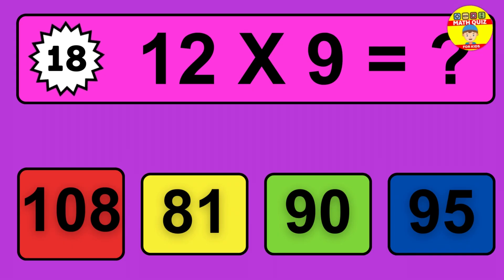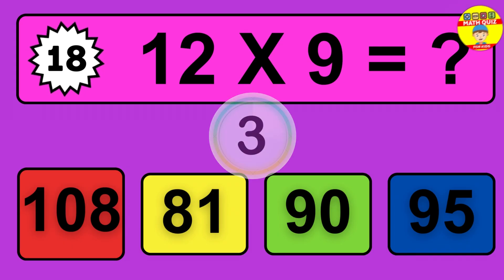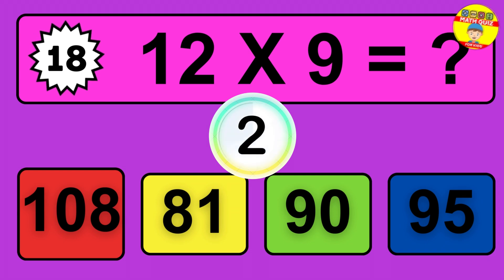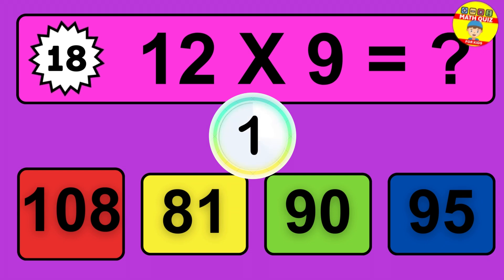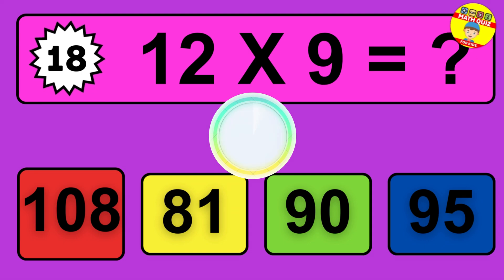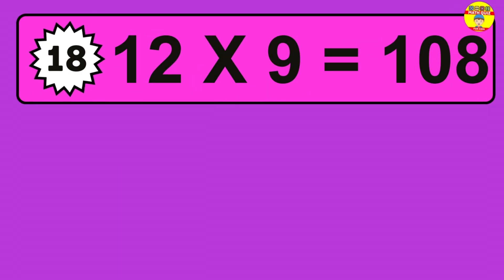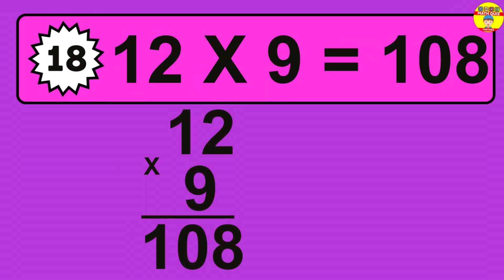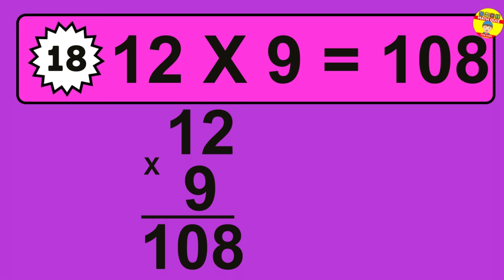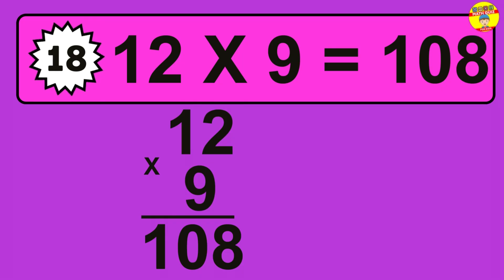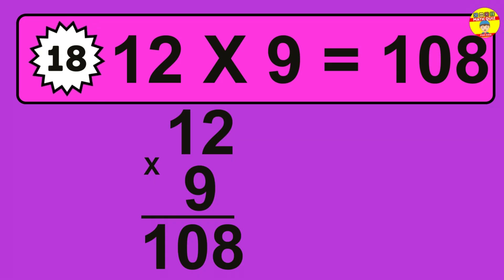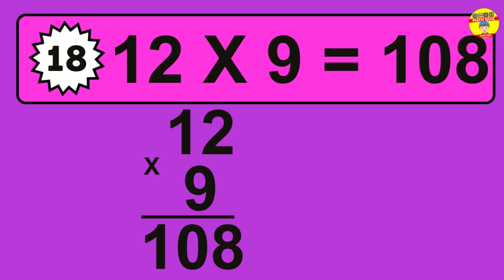Question 18. 12 times 9 equals what? The answer is 12 times 9 is 108. To calculate, we have 12 groups with 9 balls each one. So, how many balls do we have? 108 balls.